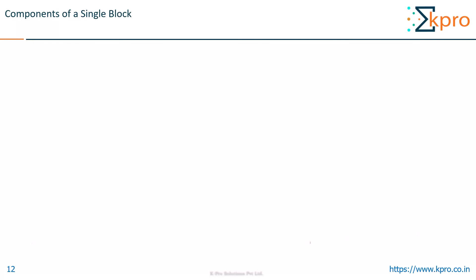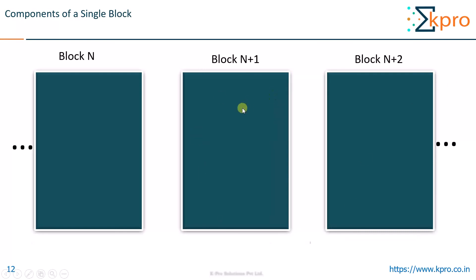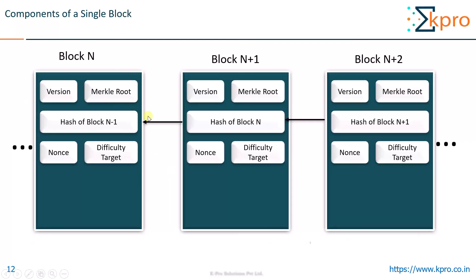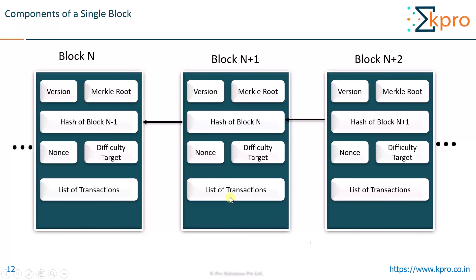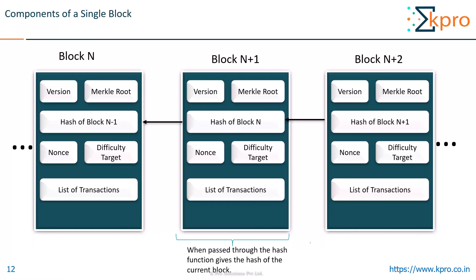Next let us see the components of a single block. Let us consider a snapshot of the blockchain with block N, block N+1, and block N+2. All these blocks have a block header with the fields: version number, Merkle root, hash of the previous block, Nonce, and difficulty. In block N+1, the field for hash of the previous block will contain the hash of block N, since that is the previous block. In addition to the block header, we have the list of transactions — all the transactions grouped in that block. When all these things are passed through the hash function, it gives us the hash of the current block. This is basically what a single block consists of and how a hash of a block is found out.